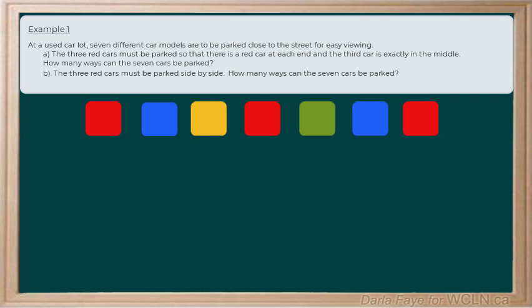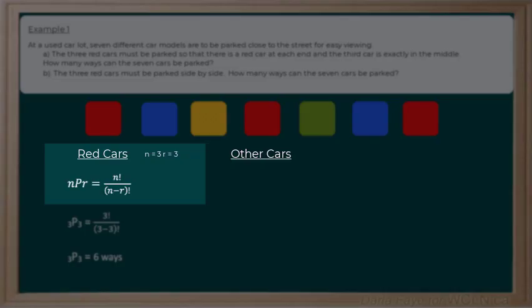When I'm analyzing this problem, let's look at this from the red car perspective and the other cars. Let's label them. Now we've got three red cars and it's asking us to order all three of them. So if we bring up our permutations equation here,